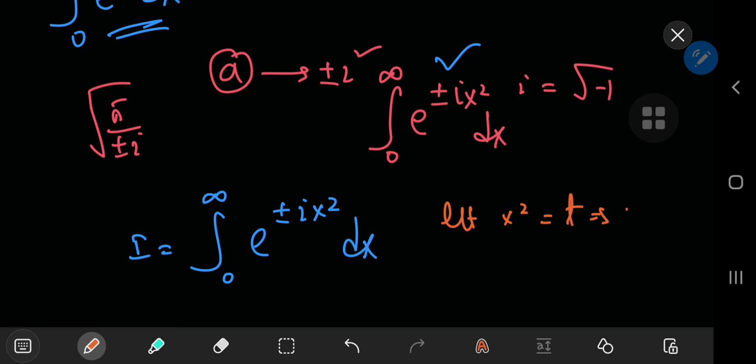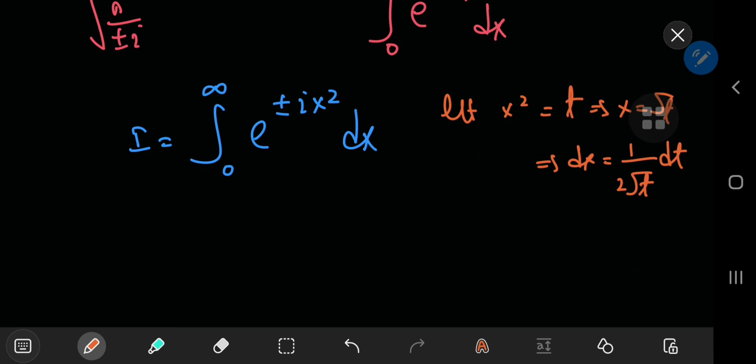which implies that x equals the square root of t, which further implies that dx equals 1 by 2 square root t dt. So that means our integral transforms into the integral from zero to infinity.